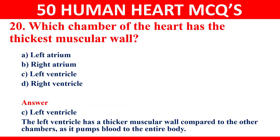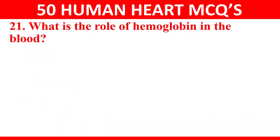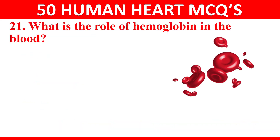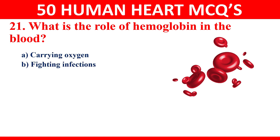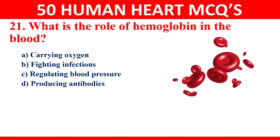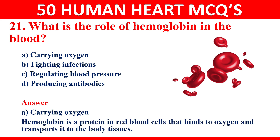Question 21: what is the role of hemoglobin in your blood? Options are carrying oxygen, fighting infections, regulating blood pressure, or producing antibodies. The right answer is carrying oxygen. Hemoglobin is a protein in red blood cells that binds to oxygen and transports it to the body tissues.